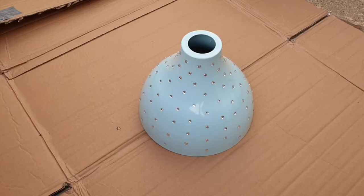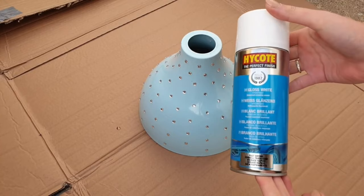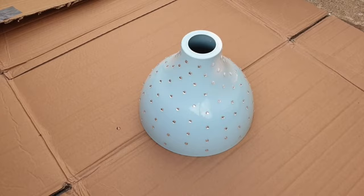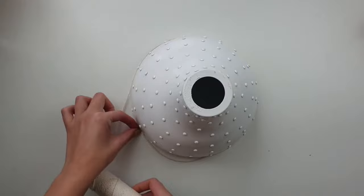If the glue is not strong enough, you can always use an extra drop of hot glue. Once the whole lampshade is fully covered in the gems with the wanted design, I take it outside and give it a few layers of spray paint. I'm going with white gloss paint which gives this lampshade more of a modern look.